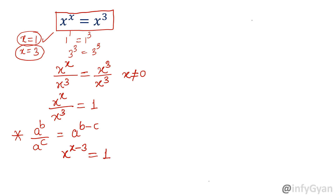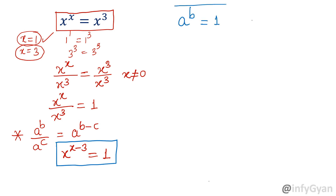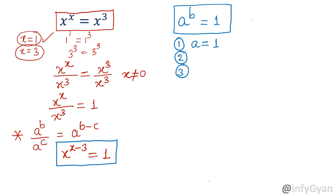This is how we calculate this exponential equation in terms of x. Now, recalling the form a raised to the power b equal to 1 — in general, there are three solutions for this type of equation. First, if a is equal to 1, the right side will always be 1, so a equal to 1 is one case, where b should be real.